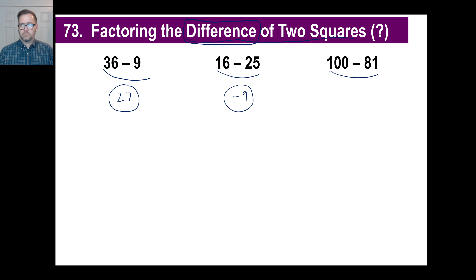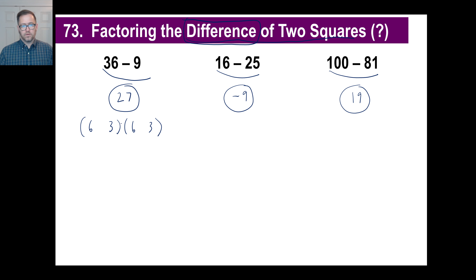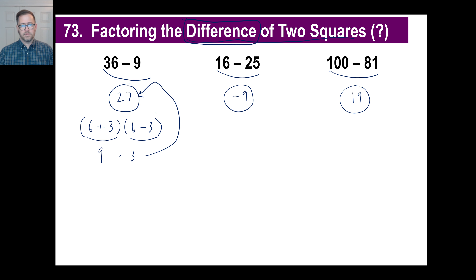And 100 minus 81 is 19. At some point, somebody started piddling around and discovered that you could take the square root of each number and line them up next to each other. So with 36 minus 9, I get 6 and 3. I could do 6 plus 3, and then 6 minus 3. And if you multiply those — that's 9 times 3 — you get the answer 27.